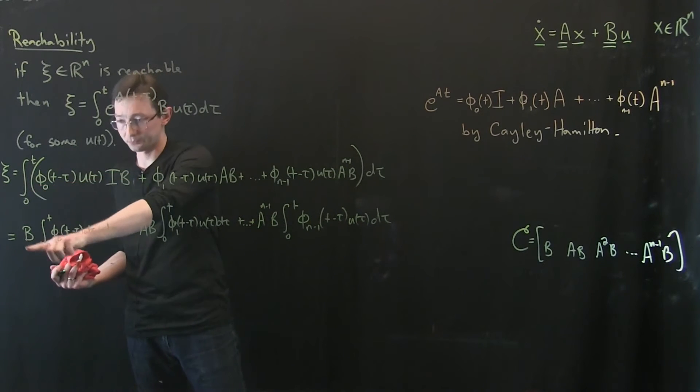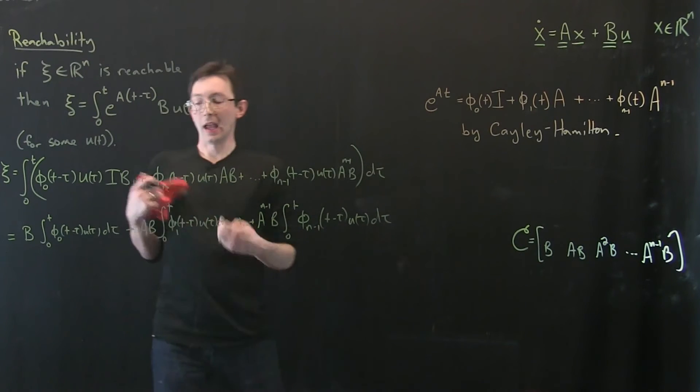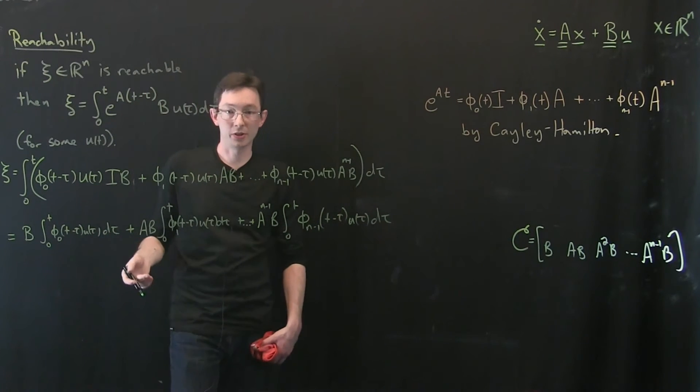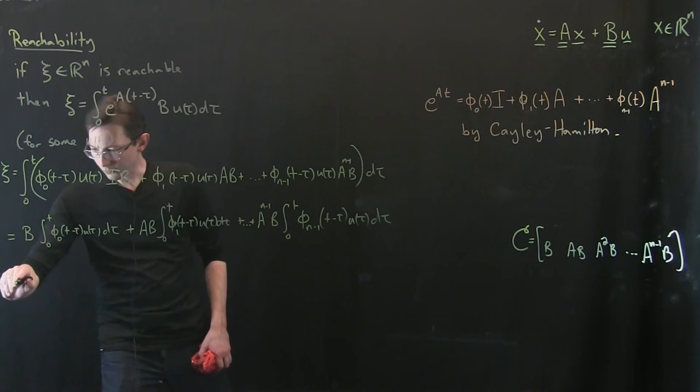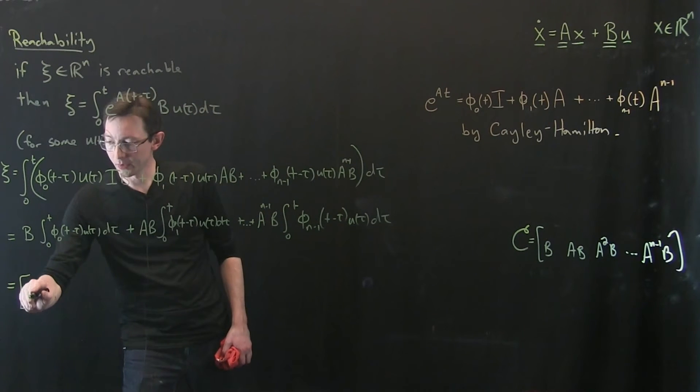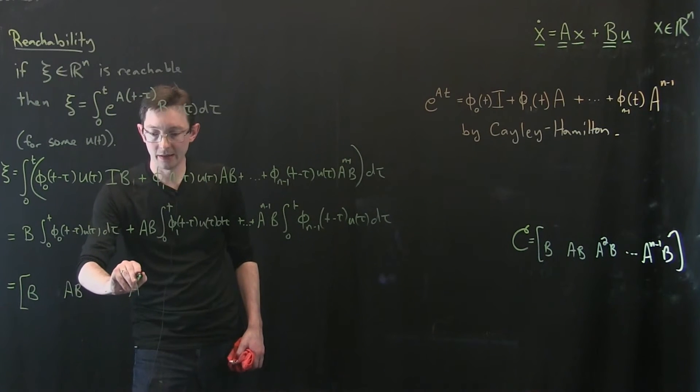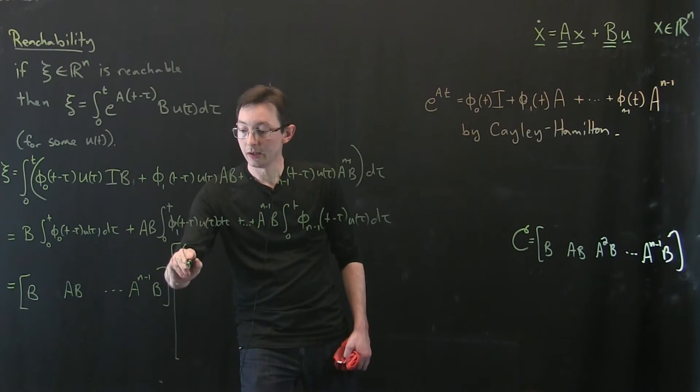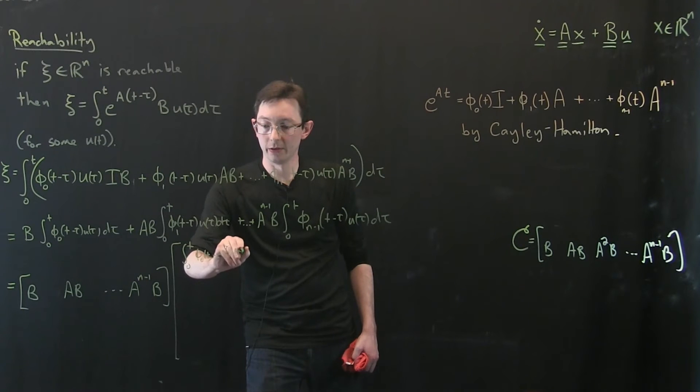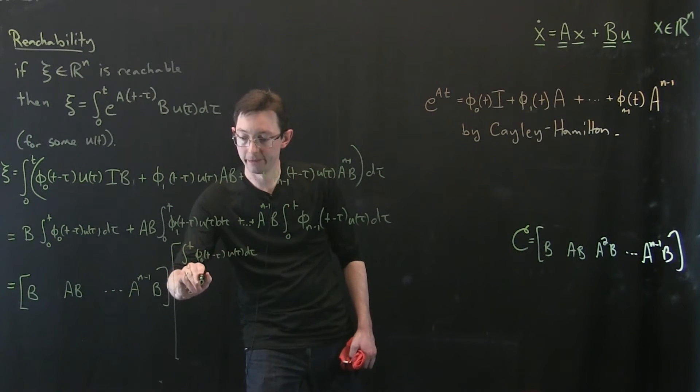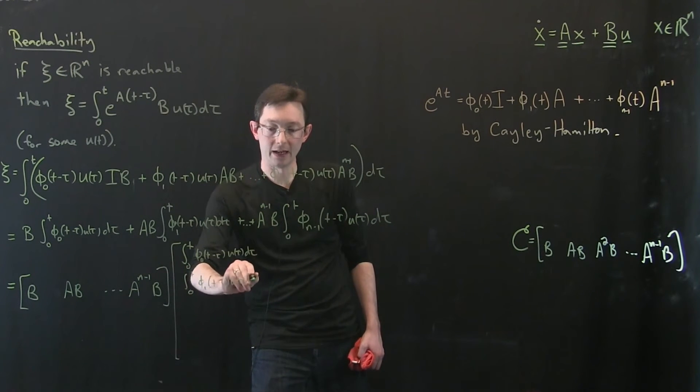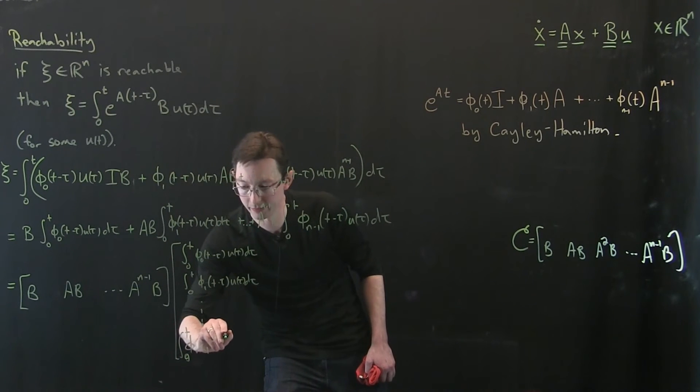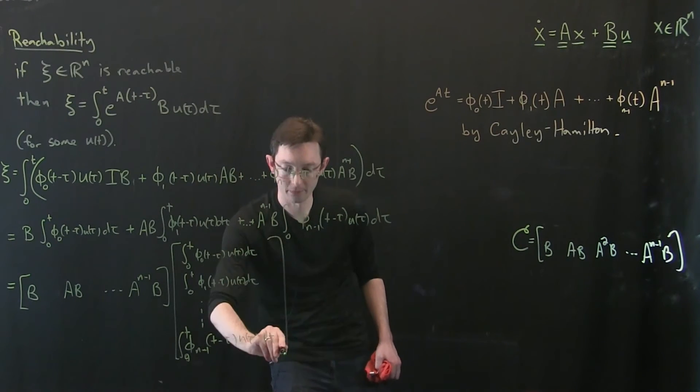Okay? So this state C, if it's reachable, can be written as this sum of integrals for some u. And now the cool thing is, this is just a convolution integral. This is like a number. Okay? Or a small vector if u is multiple channel. But this is something I can evaluate in the integral. And I can essentially write this as [b, Ab, ..., A^(n-1)b] times another matrix of all of these convolution integrals. Integral 0 to T of φ₀(T-τ) u(τ) dτ. Integral 0 to T of φ₁(T-τ) u(τ) dτ. And so on and so forth. All the way down to integral 0 to T of φₙ₋₁(T-τ) u(τ) dτ.